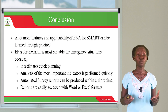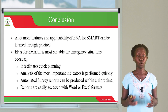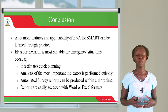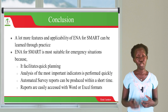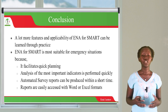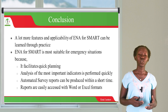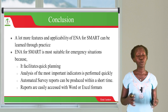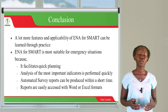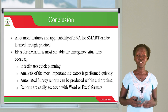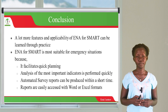In conclusion, a lot more features and applicability of ENA for SMART can be learned through practice — always go further and learn to know more. This is just a summary of ENA for SMART, but there is a lot more you can learn once you download the application, load it, get some data to enter, and try to analyze it by yourself. ENA for SMART is most suitable for emergency situations because it facilitates quick learning and enables analysis of the most important indicators very quickly. Automated survey reports can also be produced within a short time, and these reports are easily accessed with Word or Excel. You can further transfer data from Excel to another software such as EpiInfo for further analysis. Thank you very much.